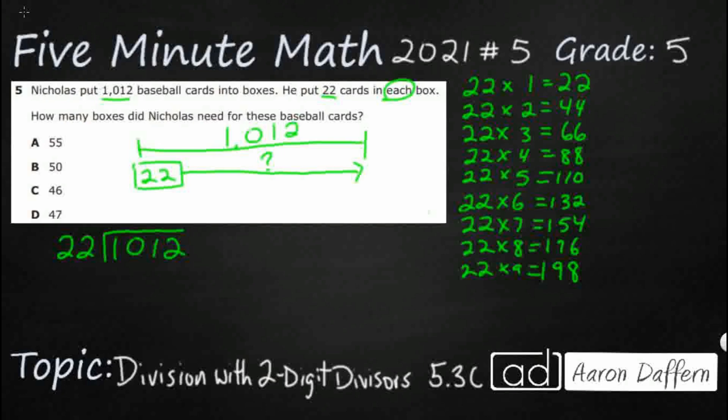So, now we are ready to tackle our 22 into 1012. 22 does not go into 1. 22 does not even go into 10. So, we're really looking at this 22 into this 101. So, I'm looking at it. It looks like it falls right in between there. 110 is too big for it. So, that's going to be 22 times 4. That's going to be my 88.